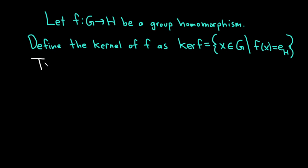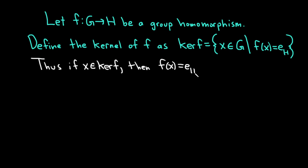So what does that mean exactly? Let's make it concrete. If x is in the kernel of f, then that means that f(x) is equal to the identity in H. So it's all the elements that get mapped to the identity.